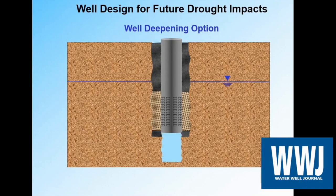In the future, if the water table drops and we don't have enough water, we can drill out from under that cement plug and deepen our well without losing the filter pack in the upper screened interval. This is a good trick to give us a plan B if we need it. If we're going to deepen a well, we want to give ourselves the opportunity to do that without completely compromising the original well.